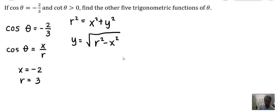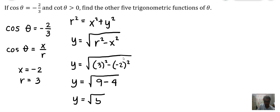We already know the value of r and x. So y = √(3² - (-2)²) = √(9 - 4) = √5. Now we know the values of x, y, and r.